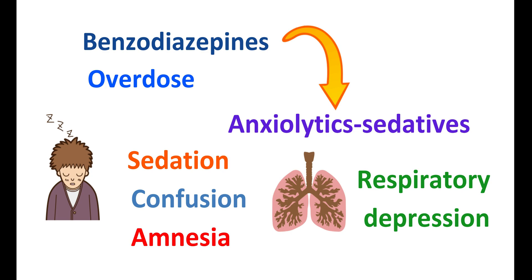The overdose of Benzodiazepines should be immediately treated, for which Flumazenil can be used as an antidote. However, Flumazenil cannot control all the symptoms of Benzodiazepine toxicity. It is particularly effective at reducing the sedative effect produced by Benzodiazepines, thereby increasing alertness in people.